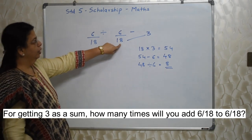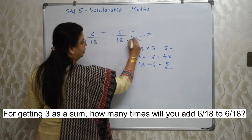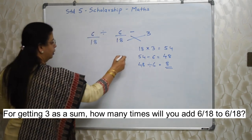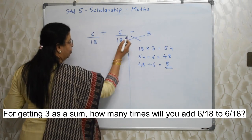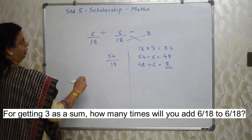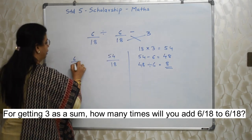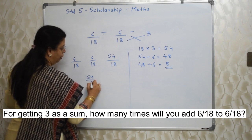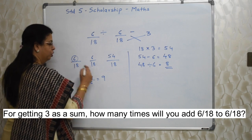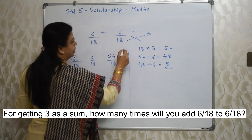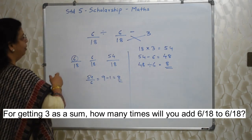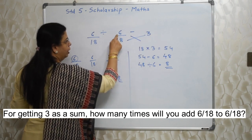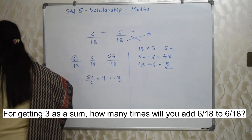The answer is 8. The method: start from the middle denominator, multiply by the target number, subtract the middle numerator, then divide by the first numerator. You can also solve with fractions: 3 equals 54 upon 18. How many 6s are in 54? 54 divided by 6 is 9, but 1 is already there, so 9 minus 1 equals 8. Both methods give 8.